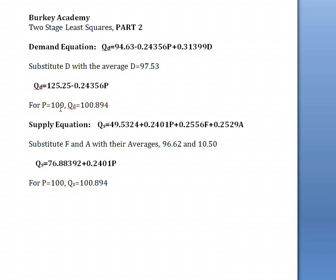When we graph this, we have the y-intercept 125.25, and we need one more point to connect to make a straight line so we can see what this looks like. If we plug in price equals 100, this equation gives a quantity demanded of 100.894. So let's look at the original data and plot to see what this would look like.